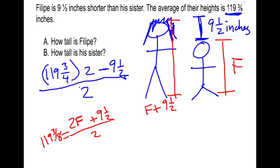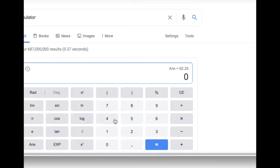119 and 3 fourths times two minus nine and a half. 119 plus three over four, times two, minus nine minus one-half, divide by two.